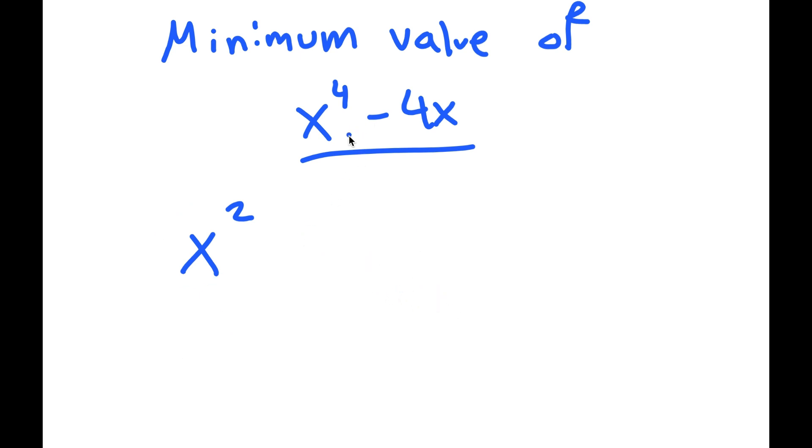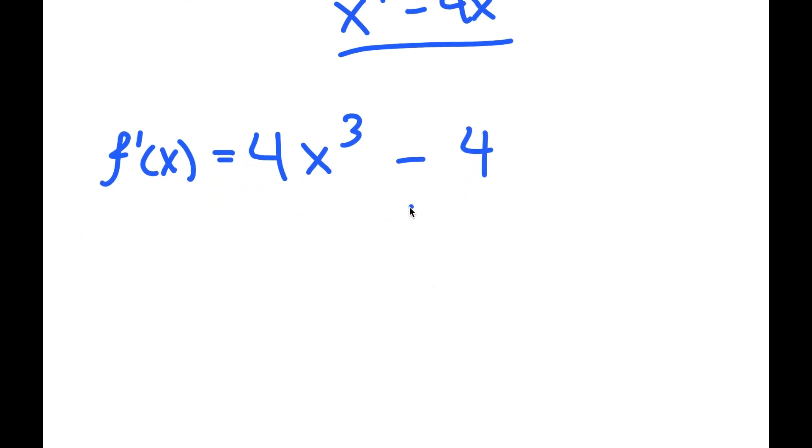This means that x to the power of 4 is going to be 4x to the power of 3. And I have this minus 4x, which we just multiply 1 with, which is just 4, and then we subtract 1. X to the power of 0 is just 1, so I'm just left with 4. So I have 4x to the power of 3 minus 4.